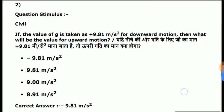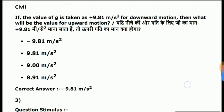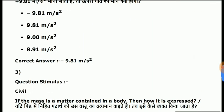Second question: if the value of G is taken as plus 9.81 meter per second square for downward motion, then what will be the value for upward motion? Answer is minus 9.81 meter per second square.